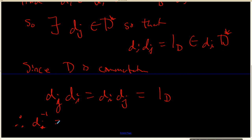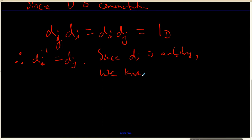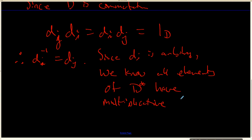Since D is commutative — because it is a domain — we know that D_j times D_i also equals D_i times D_j, which we just showed equals 1. That's enough to say that D_i inverse is D_j. Since we picked an arbitrary i, all elements of D* have multiplicative inverses, and so D is indeed a finite field.